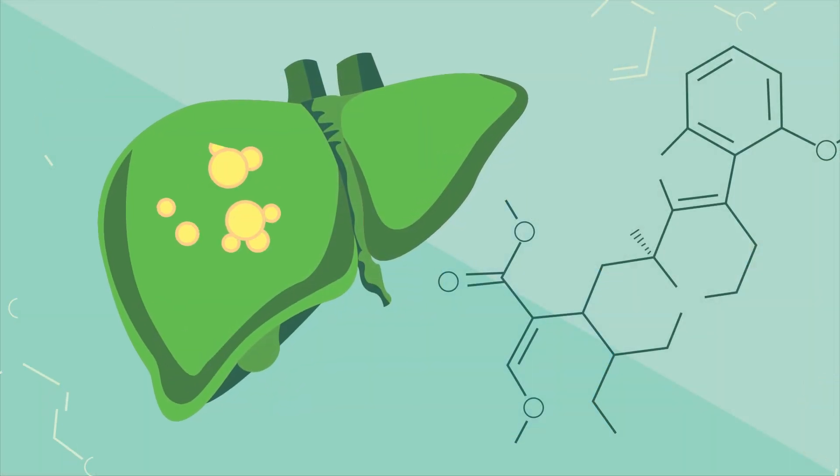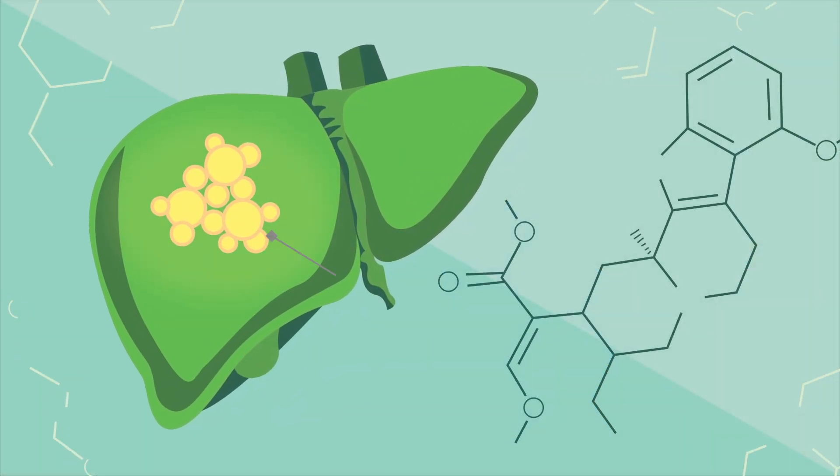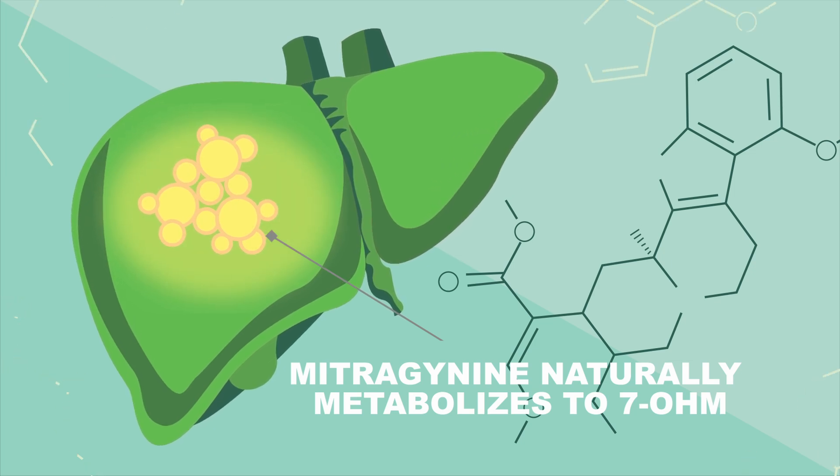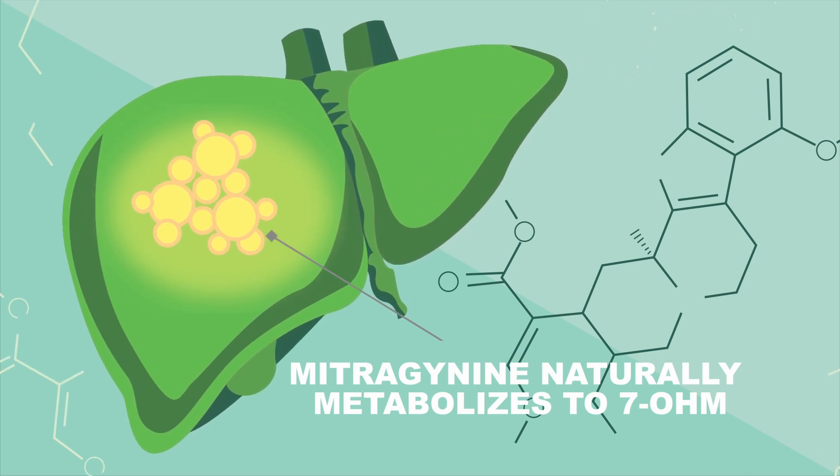This small but powerful change transforms the mostly non-active alkaloid Mitragynine into 7-Hydroxymitragynine, the compound primarily responsible for the psychotropic mood-altering effects of kratom.